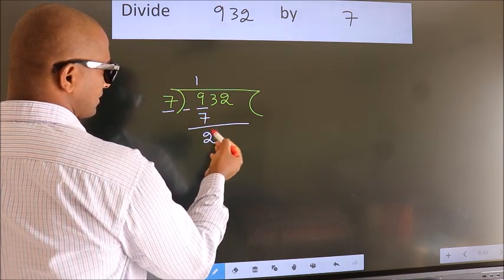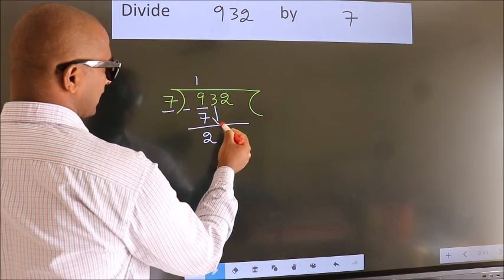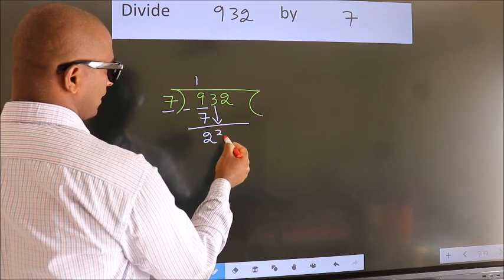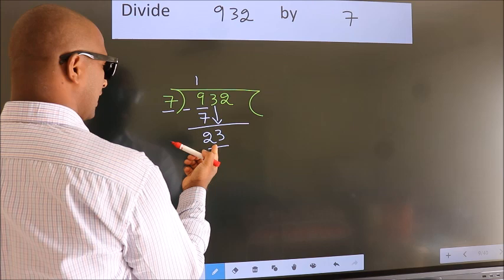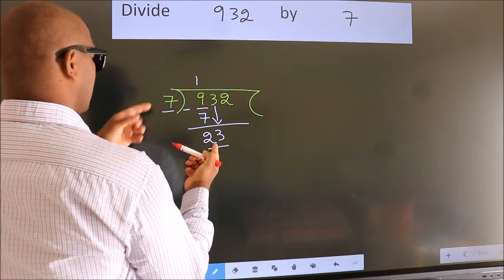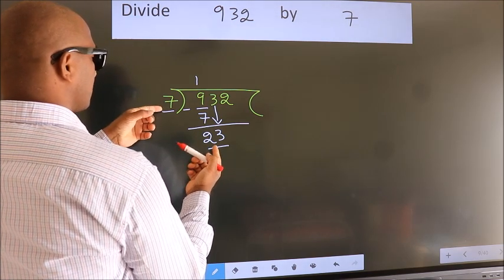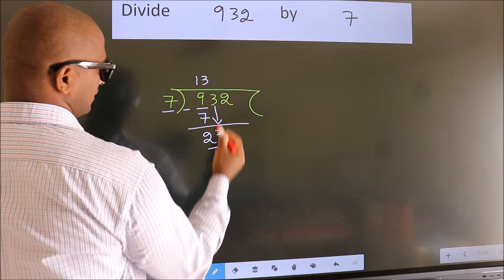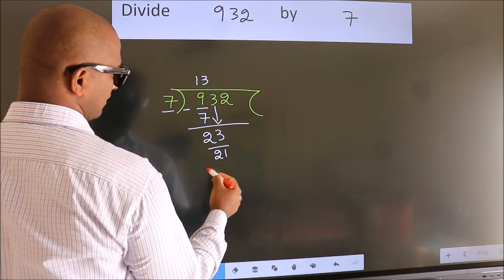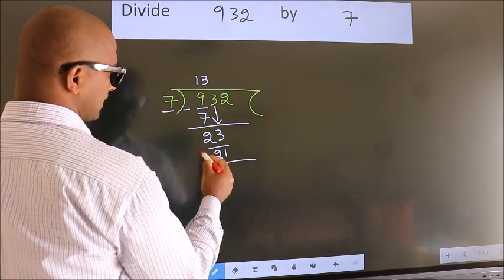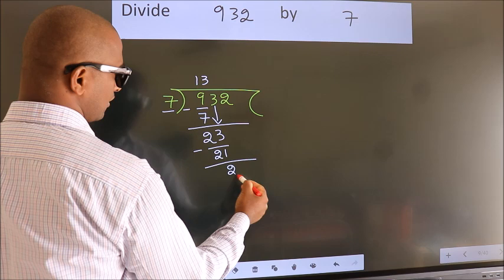After this, bring down the beside number. So 3 down. So 23. A number close to 23 in 7 table is 7 threes 21. Now we subtract. We get 2.